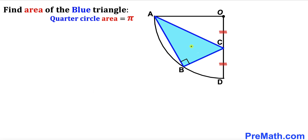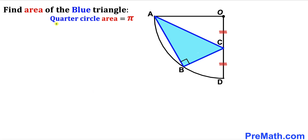Welcome to PreMath. In this video we have a blue right triangle ABC fully confined in a quarter circle with center O, such that segment OC equals segment CD. In other words, point C is the midpoint. Moreover, the area of this quarter circle has been given as π square units, and our task is to calculate the area of right triangle ABC.